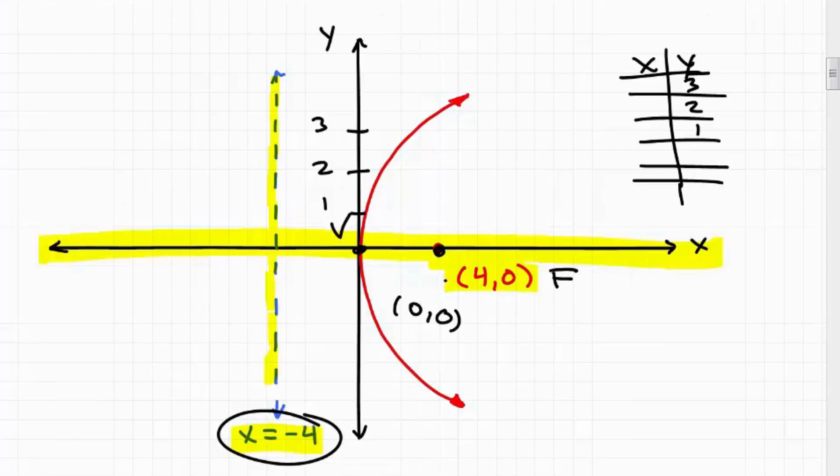Well, from the focus, if you go from the focus to any point that's on the parabola, this distance here is equal distance down to the directrix. Remember, that's going to be a perpendicular line off the directrix.